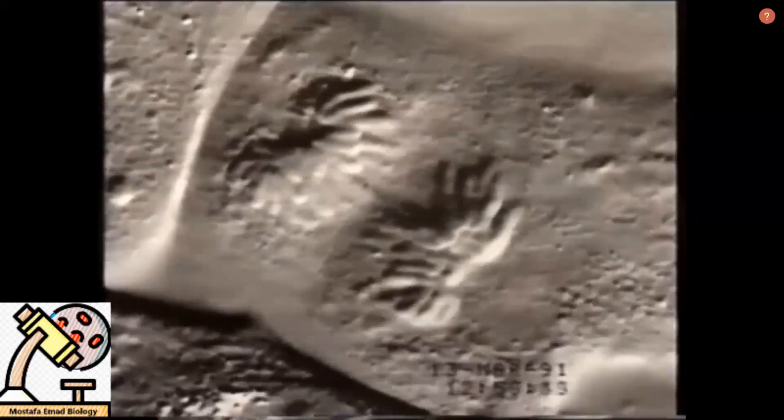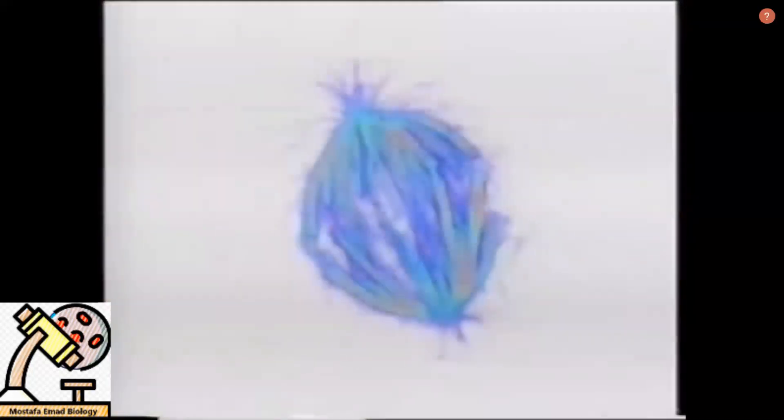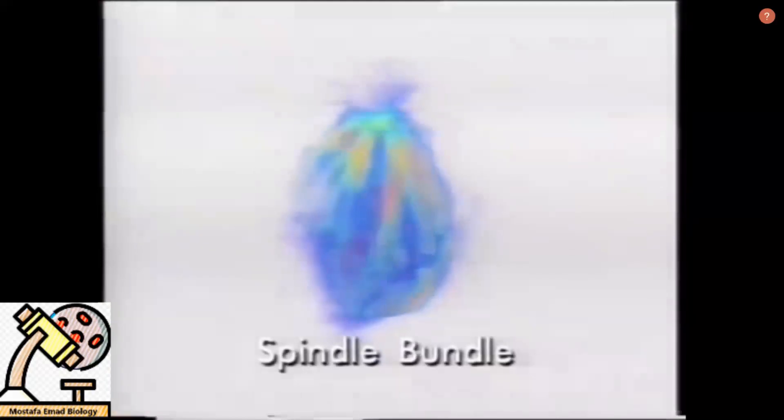In 3D, we can see what separating chromosomes look like. This structure is called a spindle bundle, and forms only during mitosis.